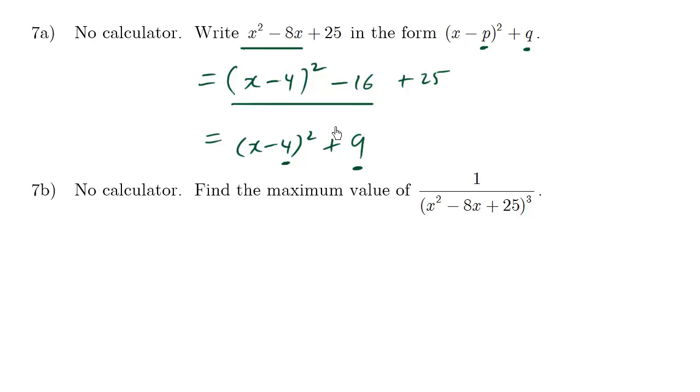Our p-value is 4, and our q-value is 9. So from this, we know that the vertex is going to be at 4 comma 9. This here is the p-value, this is the q-value, and this is the vertex.